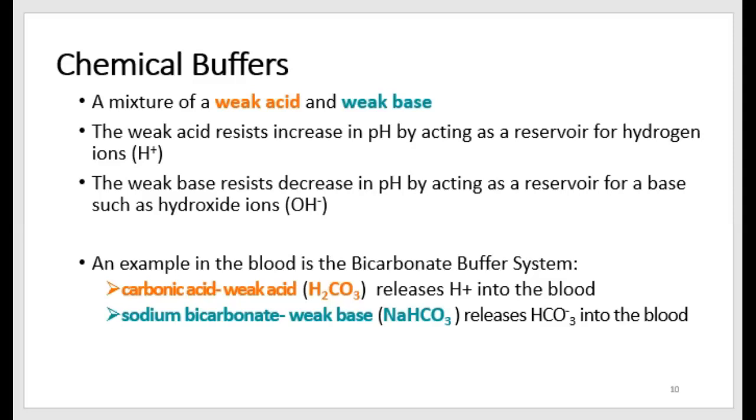The weak acid resists changes in pH, particularly an increase in pH, by acting as a reservoir for hydrogen ions. The other component of a chemical buffer is a weak base. And it resists decreases in pH, things from becoming too acidic, by acting as a reservoir for a base, like a hydroxide ion or a hydroxyl group, that can bind up hydrogens so that the pH will rise back up again. So the example in the blood that's the most important is the bicarbonate buffer system. It is composed again of a weak acid and a weak base.